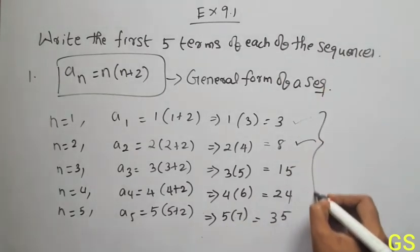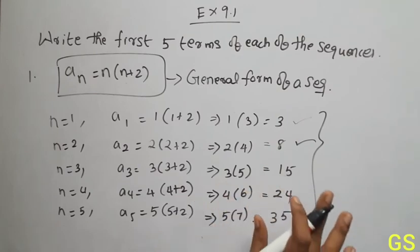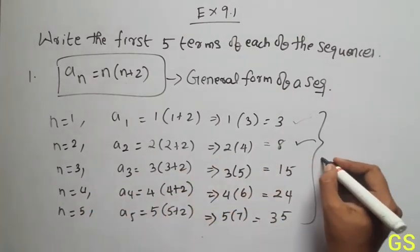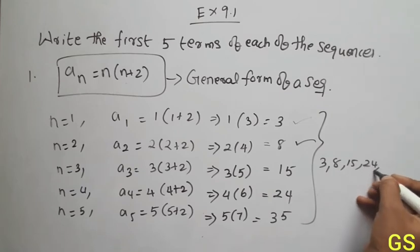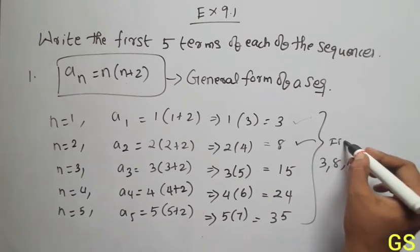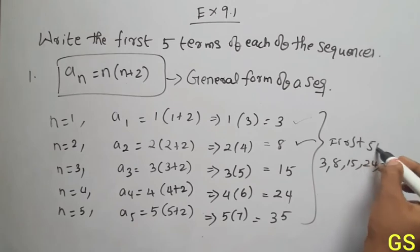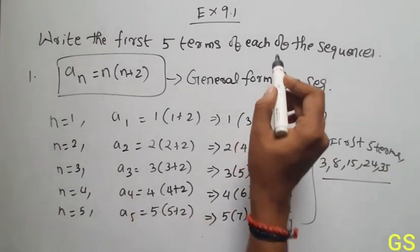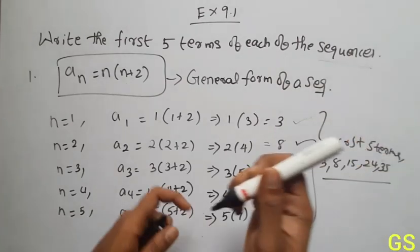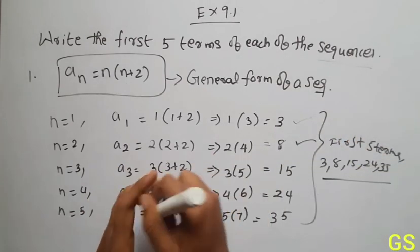This is the first five terms of the sequence: 3, 8, 15, 24, 35. First five terms. This is how we calculate this sequence. This is the second sequence.